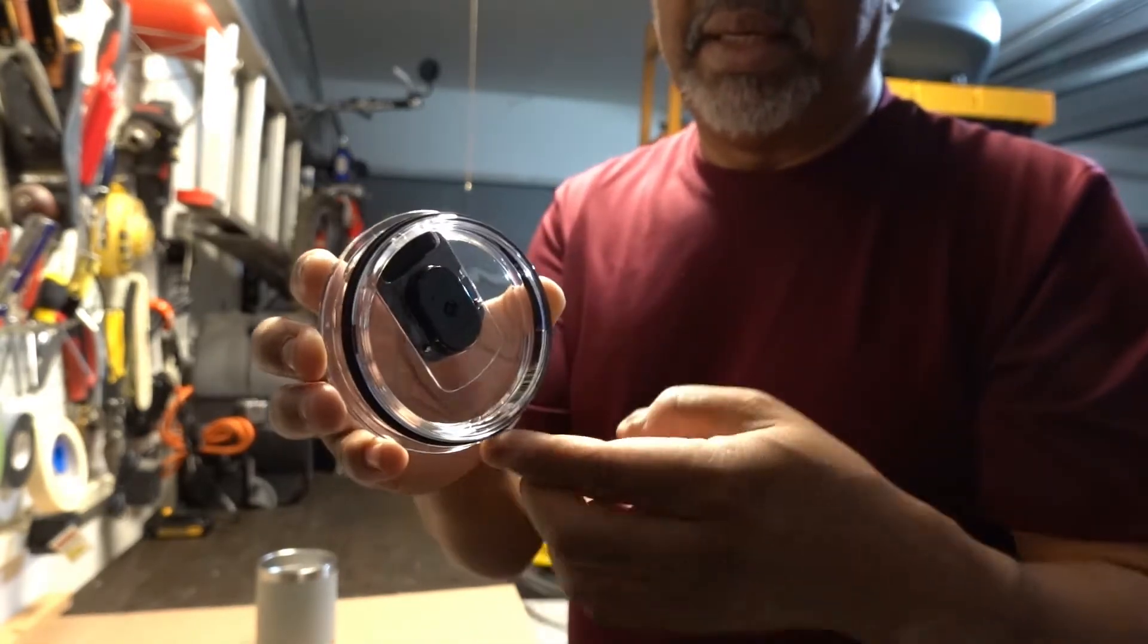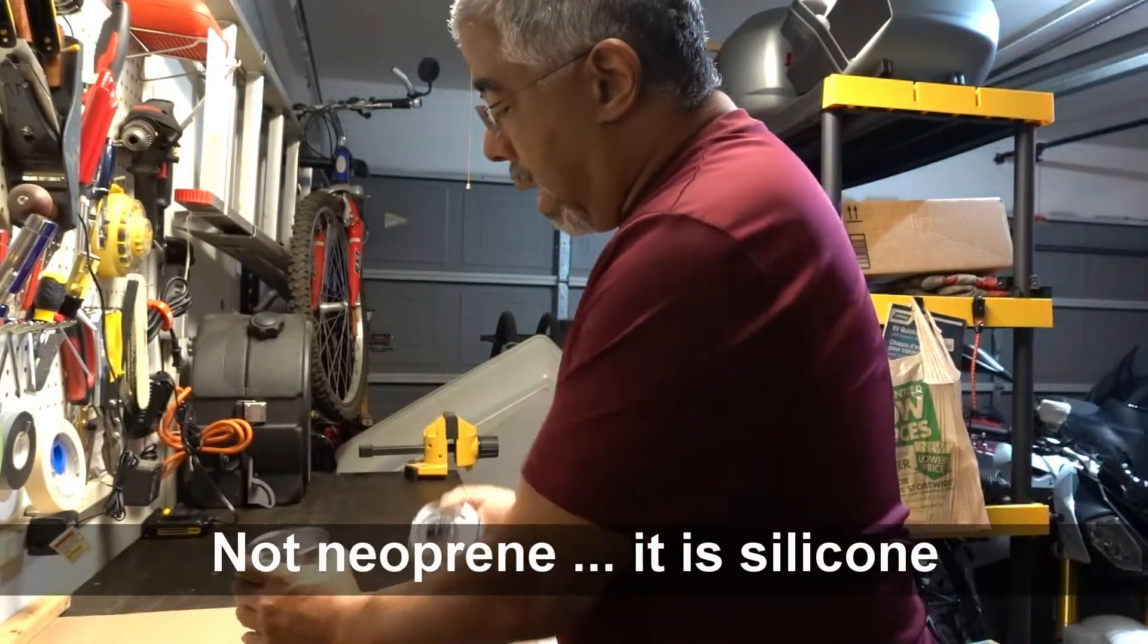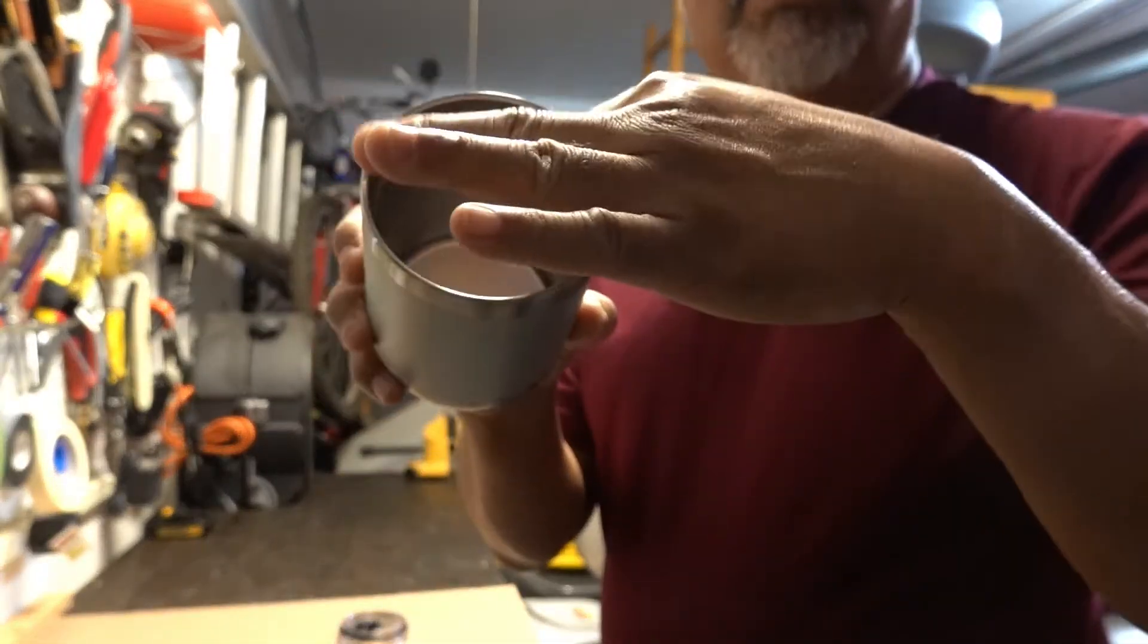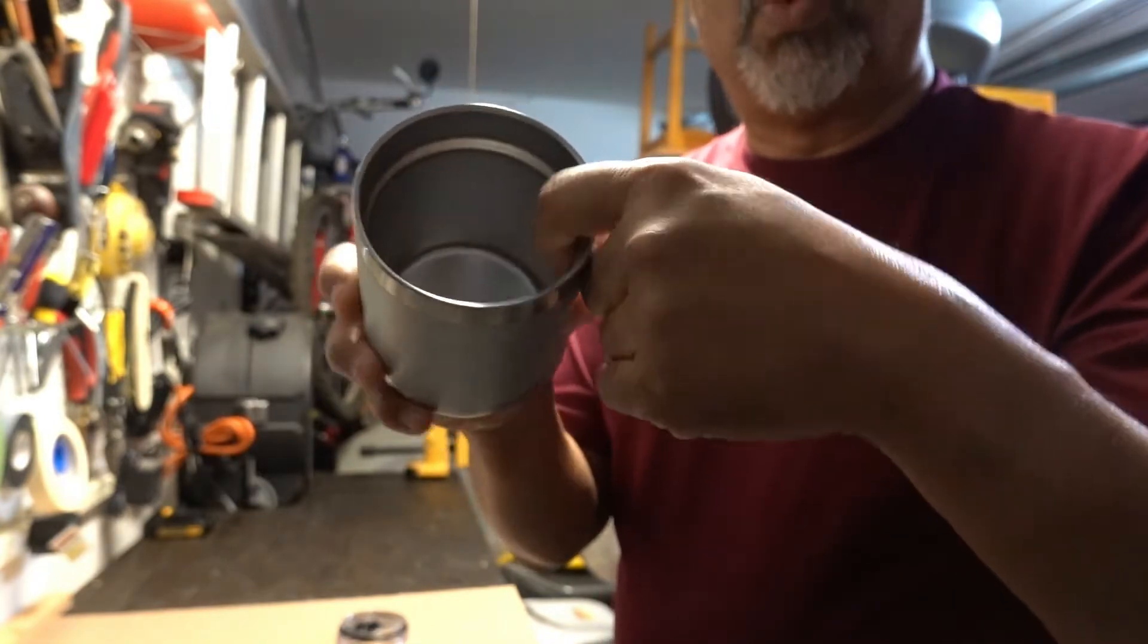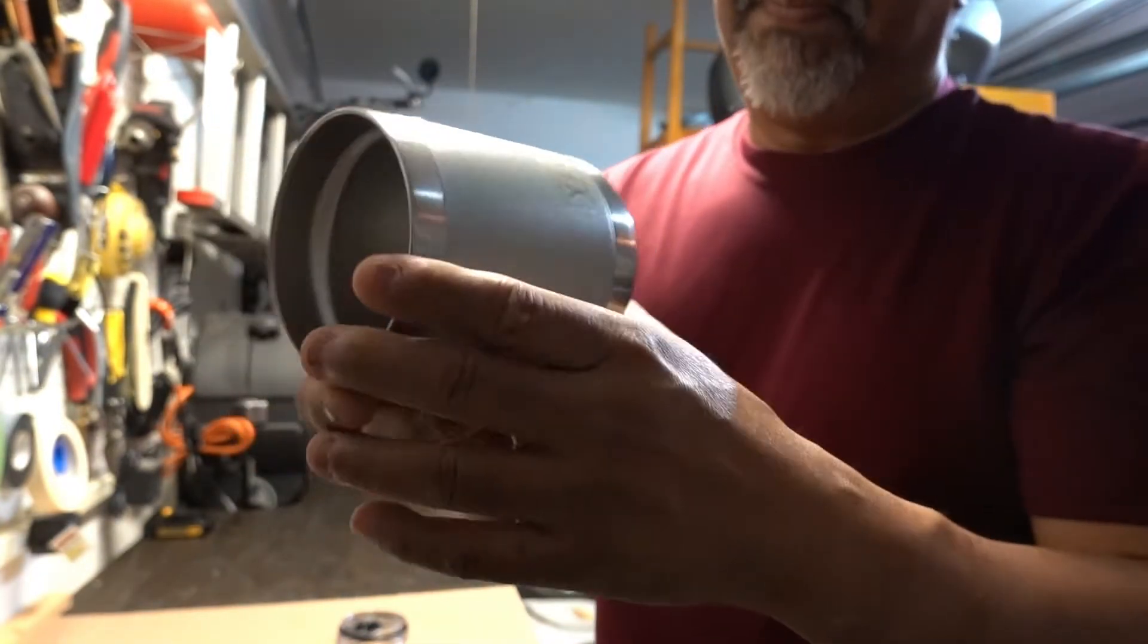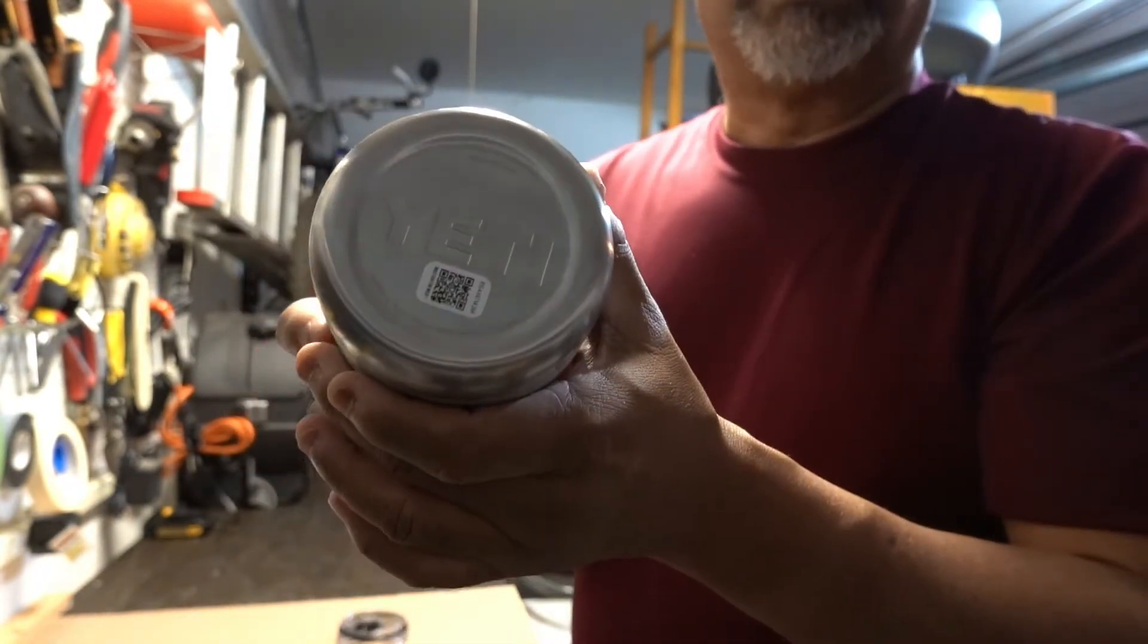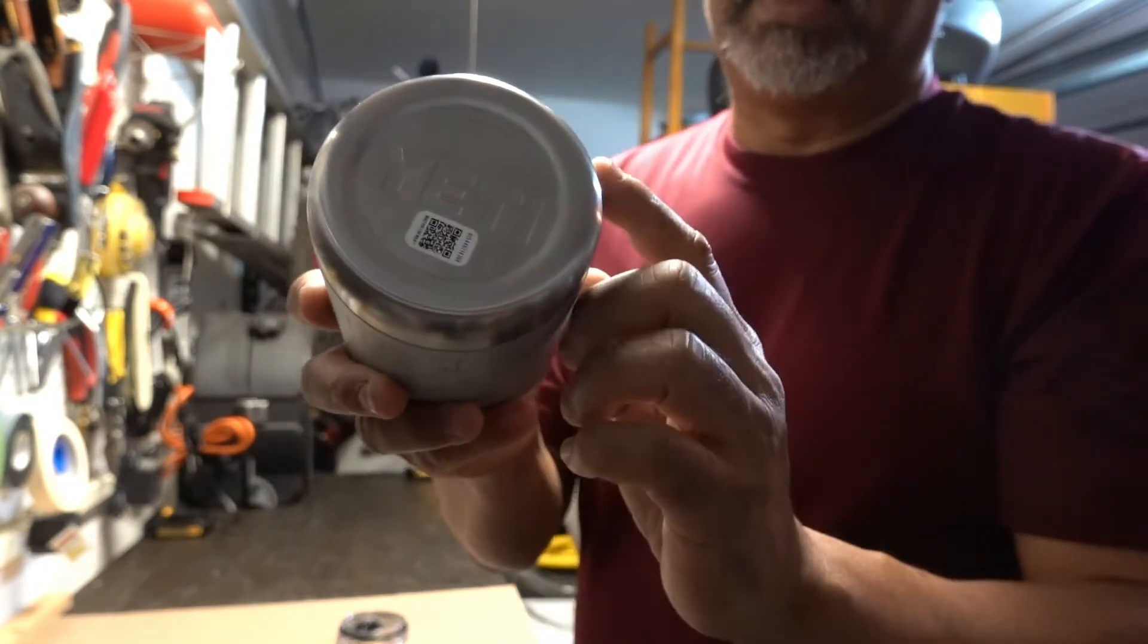It's got a nice neoprene type gasket here and the cup itself is vacuum sealed. It's got a double vacuum sealed wall here and the bottom is all stainless steel with a grain.